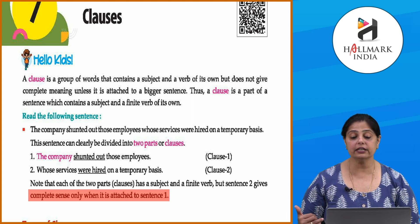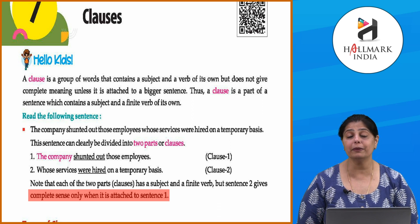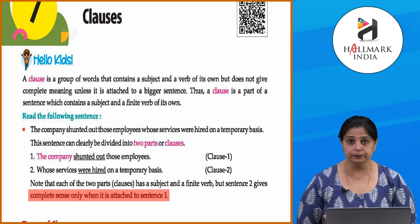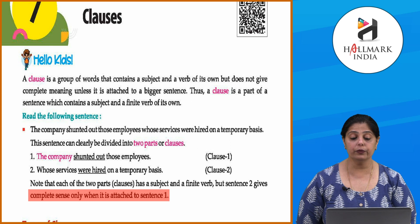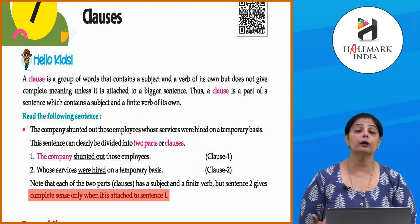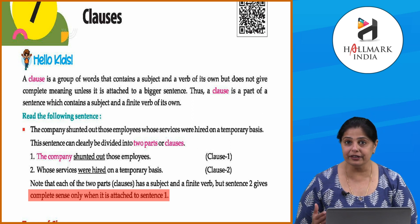Sentence two gives complete sense only when it is attached to sentence one. If we say 'The company shunted out those employees' alone, it does not make complete sense — we don't know why they were removed. That is the reason we need the second clause: 'whose services were hired on a temporary basis,' meaning those employees who were on a temporary basis were removed.